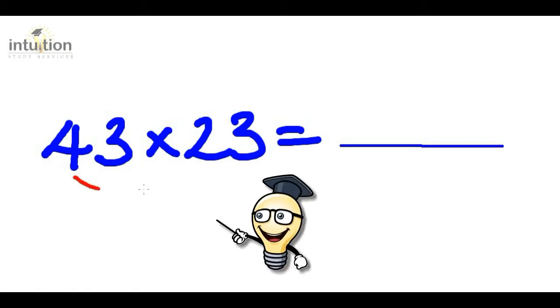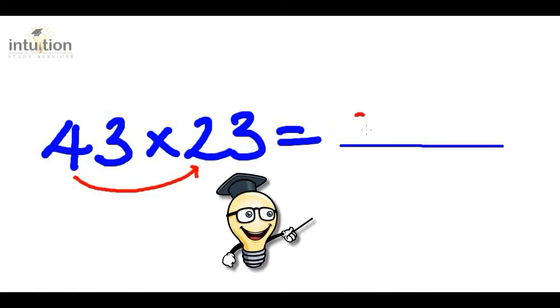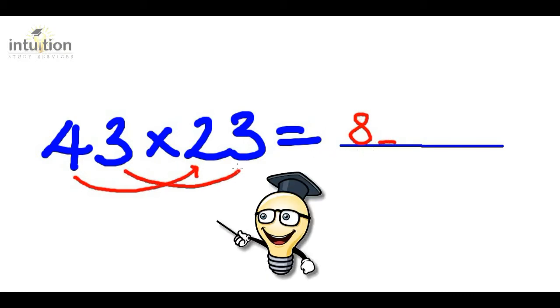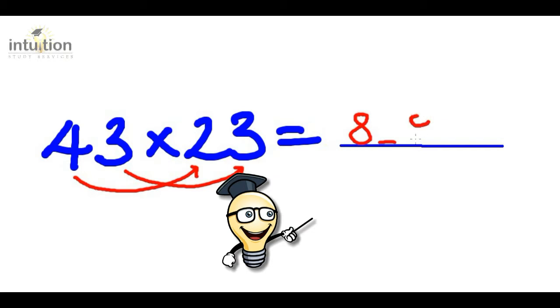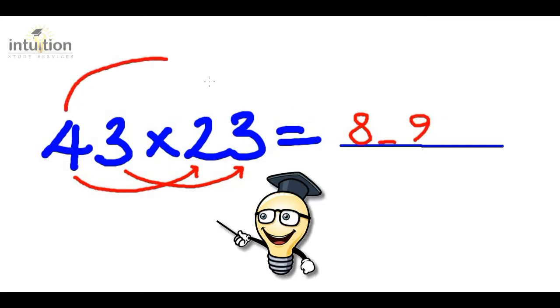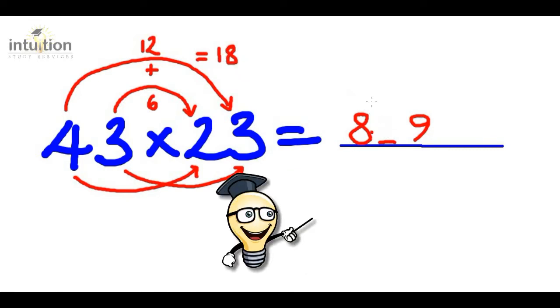Let's just use the rainbow method to get the answer. So first of all, we multiply the 4 by the 2, so the first digits of each number. That gives us 8 when we leave a gap. Then we multiply the last digits. So we do 3 times 3 and that gives us 9. Then we use the rainbow. So we do 4 times 3, which is 12, and we add that to 3 times 2, which is 6. That totals to 18. So what we do here now, we only got space for one digit. So we put the 8 here and we carry the 1 there. And what we do with that one is we add that to this 8 over here. So the final answer then becomes 989.